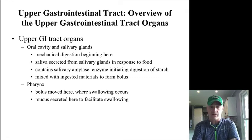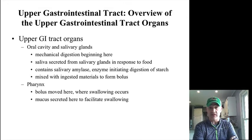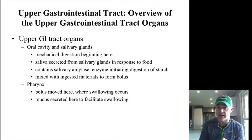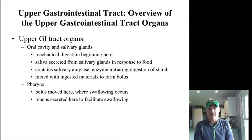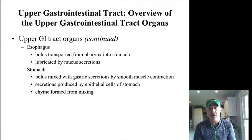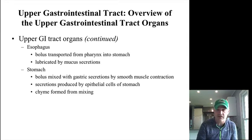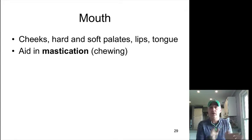These upper GI tract organs are where we start. We begin with the oral cavity and salivary glands. In the mouth there is mechanical digestion taking place with the teeth, and there is also some chemical digestion of starches. Saliva contains salivary amylase, an enzyme that starts clipping starches — large carbohydrates — into smaller, simpler sugars. The food is swallowed, moves through the throat with a little mucus to aid swallowing, then down through the esophagus, which mainly just has mucus secretions, until we get to the stomach where there is a lot of mixing, enzymes, and acid, producing what we call chyme.